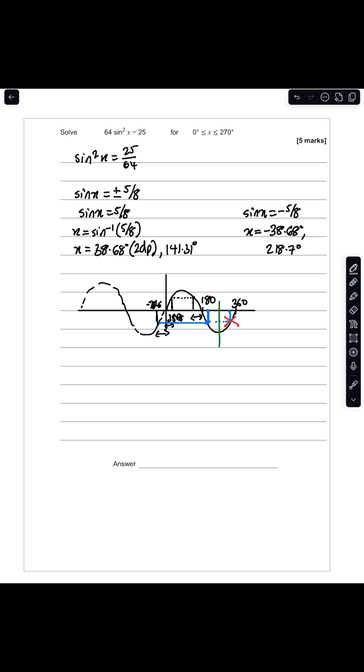So your final values for x will be 38.7 degrees, 141.3 degrees, and 218.7 degrees, rounding these to 1 decimal place.